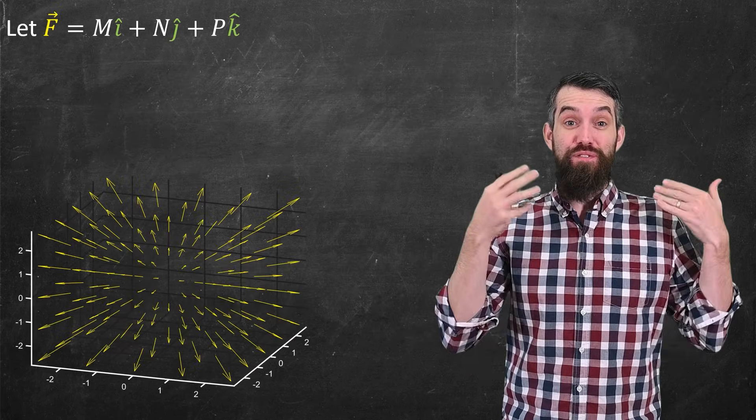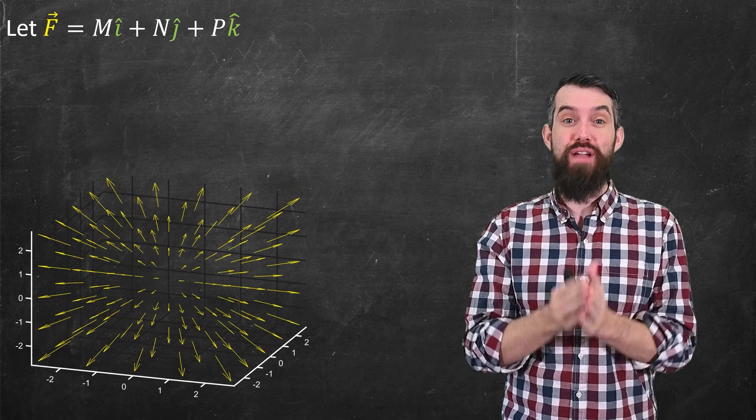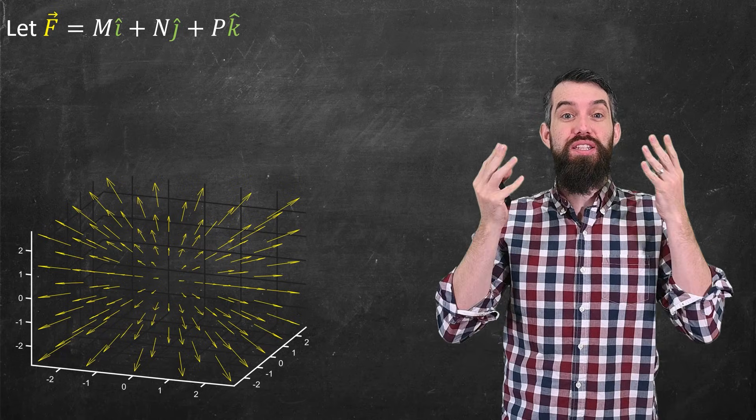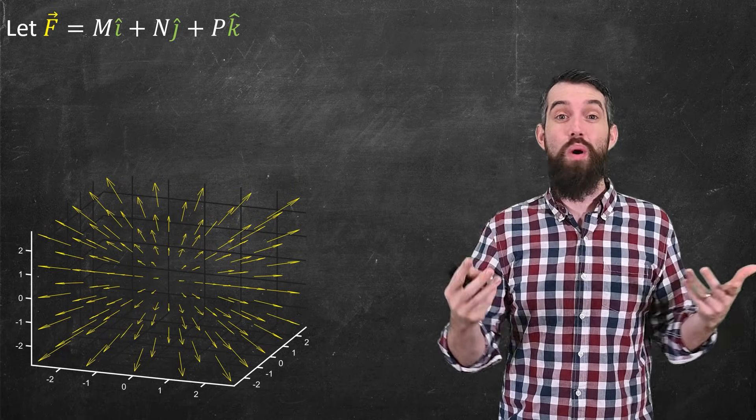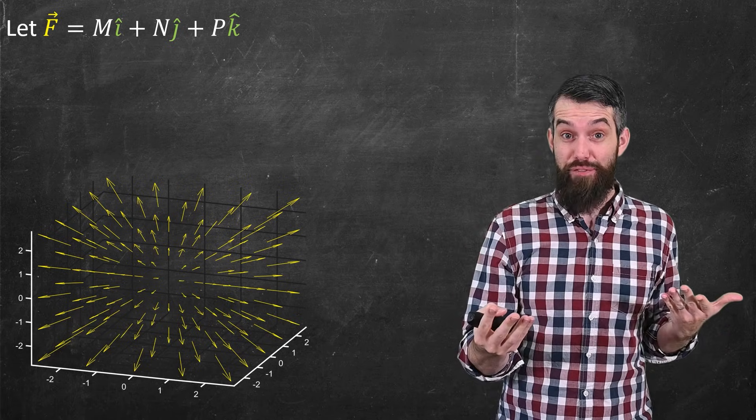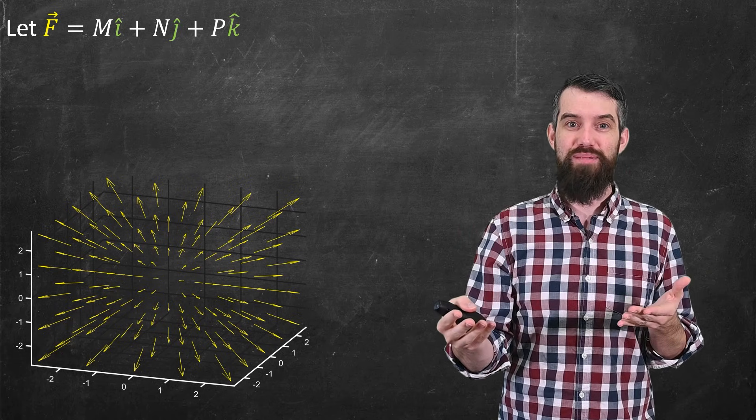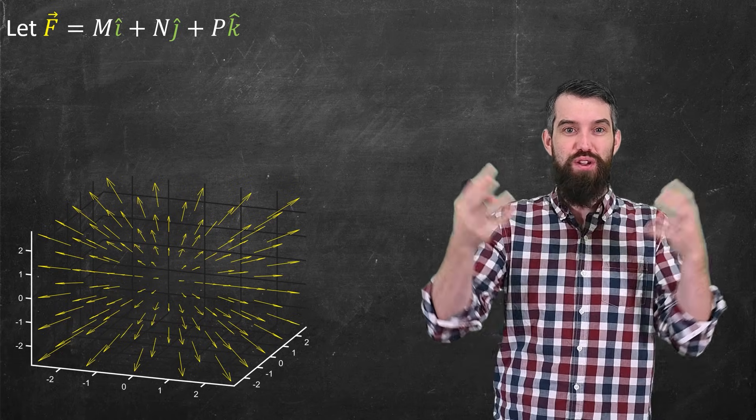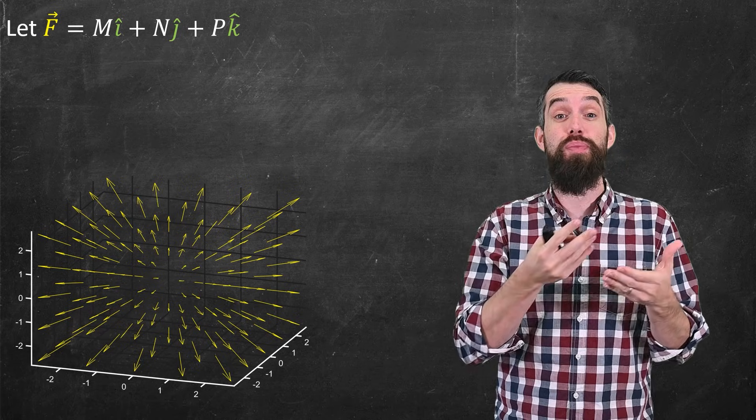In this video, we're going to see the final major theorem of our vector calculus course, the divergence theorem. So what are we talking about? I'm going to begin with the vector field. This is a three-dimensional vector field. It's got components m, n, and p. And the vector field I've given is a source vector field. Everything seems to be exploding out from the origin.